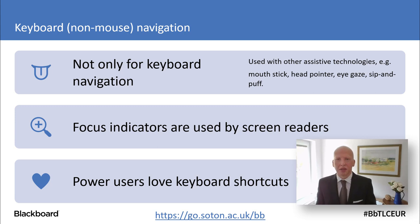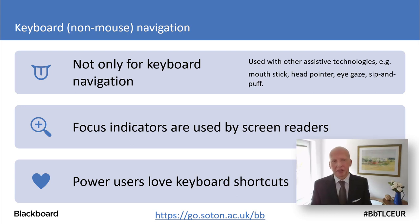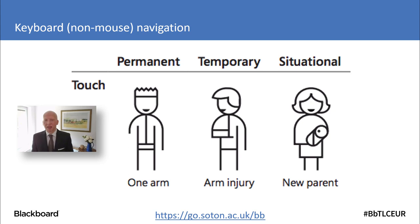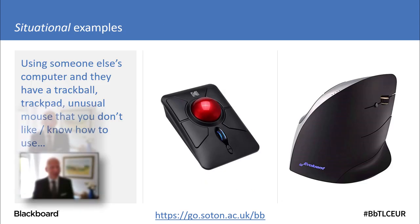It's not only used for keyboard navigation — this paradigm of focusing on different elements and being able to select them is used for other assistive technologies and by screen readers. Also, power users love keyboard shortcuts, and I'm sure many of you find it faster to use the keyboard than the mouse. Focus indicators and using focus might also be something you use because of a temporary or situational impairment — for example when you're in a cramped space or only have one hand available.